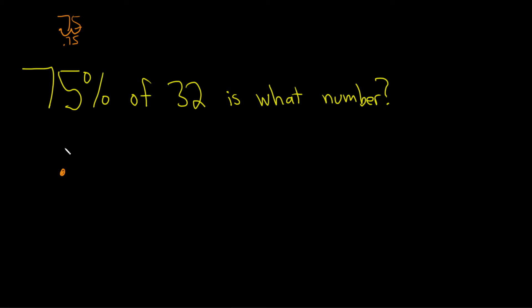So you have .75. And I want to put this in parentheses. The reason I'm doing that is because the of here means multiply. So times, I'll use a dot for times. You can also use an x. I'm just using a dot. 32.